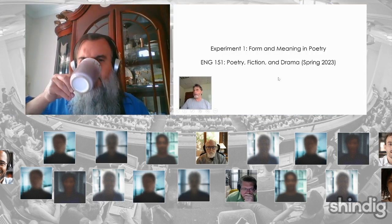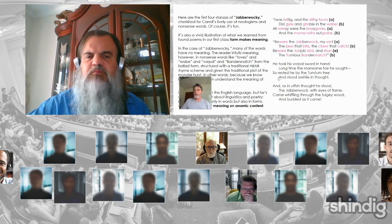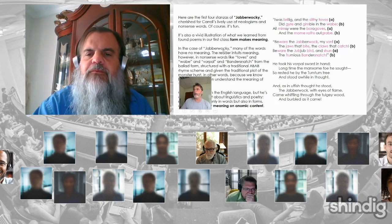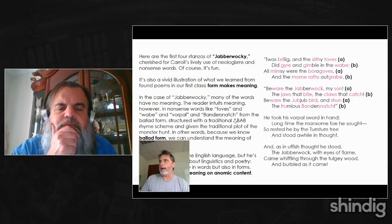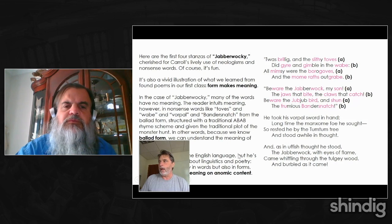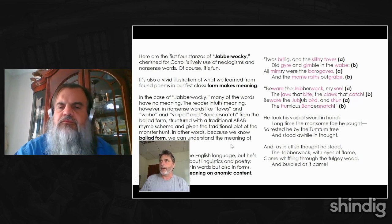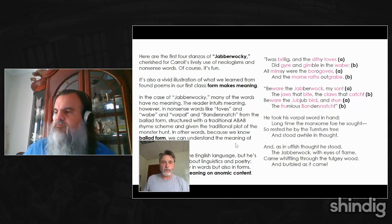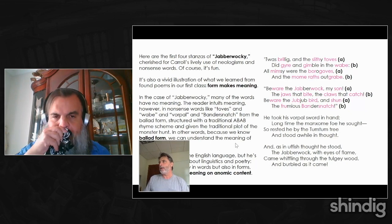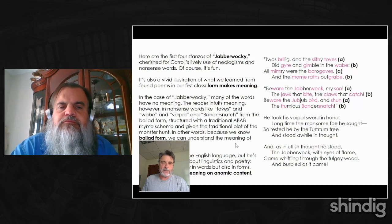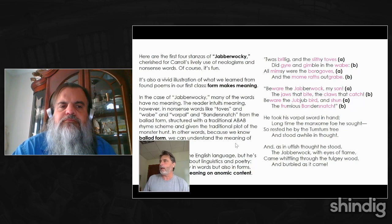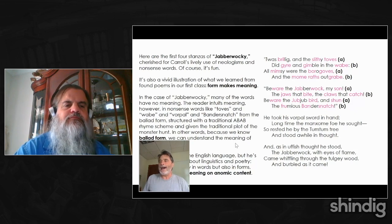Experiment one: this was an intro to lit class. The basic lesson was the relationship between form and meaning in poetry — the way that form itself can create or layer meaning on content. We used Jabberwocky as a nonsense poem that gains its sense because Carroll writes it in traditional ballad form. So: how can form layer meaning on anomic content — content that is devoid or confusing in meaning?